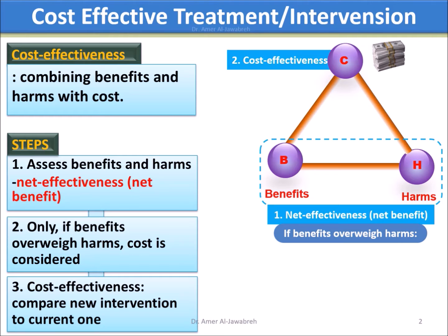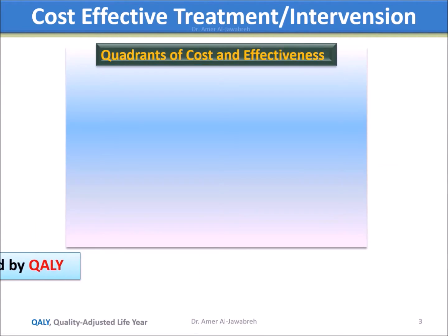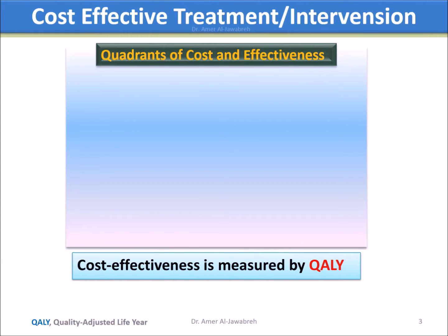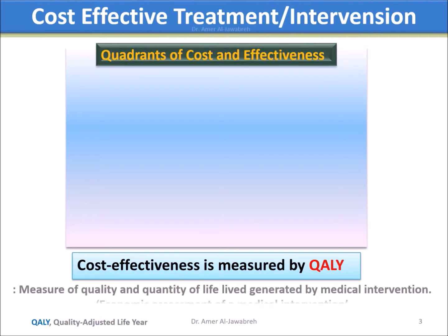Third, cost effectiveness is to compare a new intervention with a current or standard one. Cost effectiveness is measured by QALY — Quality Adjusted Life Year — a measure of quality and quantity of life lived generated by a medical intervention.